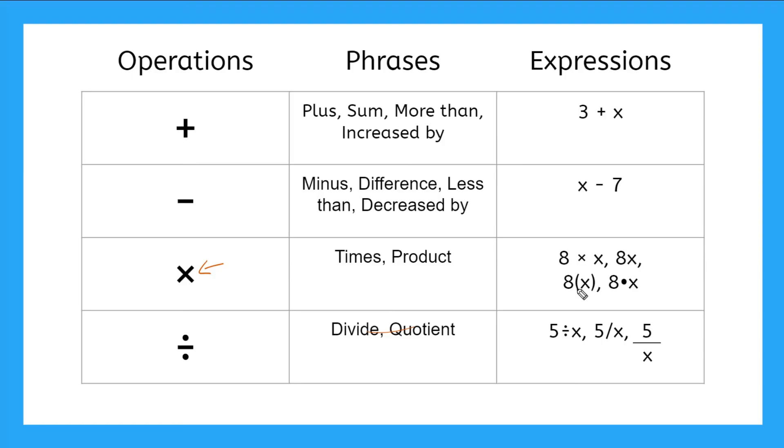Or, you could put parentheses around either your number or your variable. Or, you could even do two numbers like 8 and 6. You can also use a bullet or a dot. 8 with the bullet between the variable or another number also means multiplication.